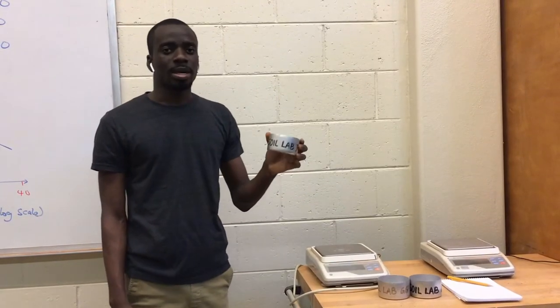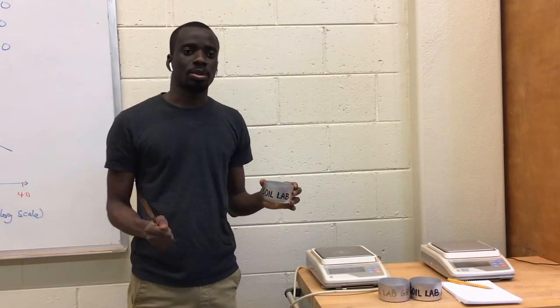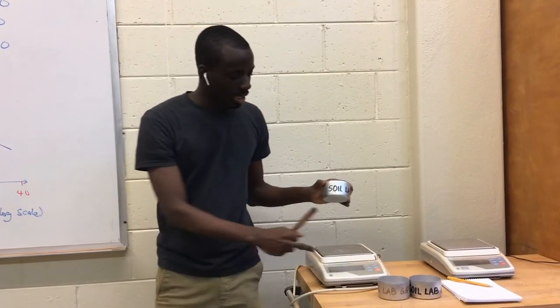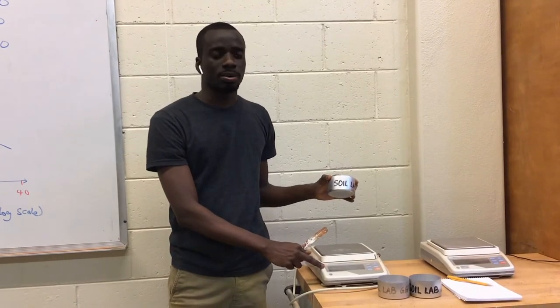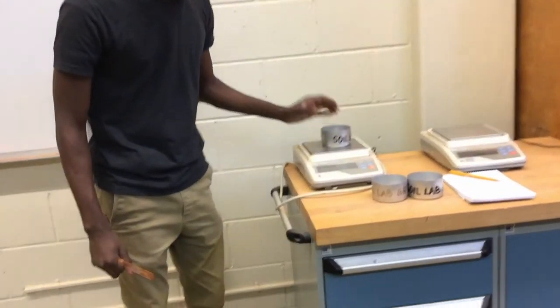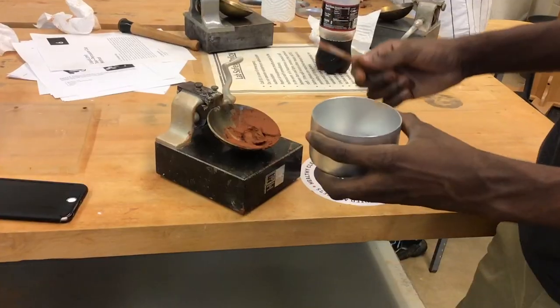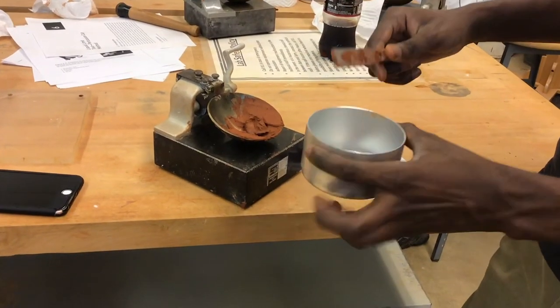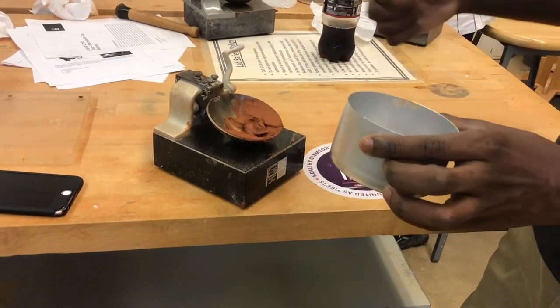Now we measure the mass of the empty can because we will determine the mass of the sample before you put it in the oven. My scale is at zero grams. Now we take a portion of the sample and put it into the empty can and weigh it.